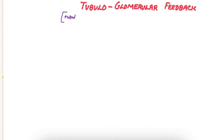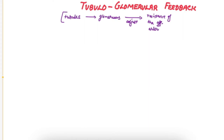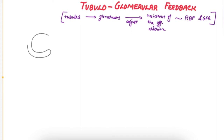This is a video on tubuloglomerular feedback, a renal autoregulatory mechanism where the tubules talk back to the glomerulus to adjust the resistance of the afferent arteriole, thereby bringing renal blood flow and GFR back towards normal. If the GFR increases, by adjusting the resistance of the afferent arteriole the GFR is brought back towards normal. One of the mechanisms by which this is done is tubuloglomerular feedback.